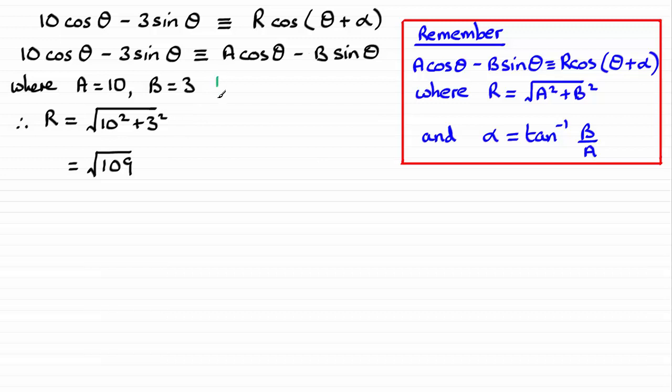And when it comes to working out α, remember α is equal to the inverse tan of B over A. So that's the inverse tan of B which is 3 over A which is 10. Make sure your calculator is in degrees mode for this one.